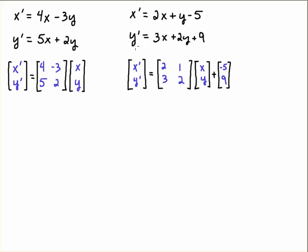Next we have a similar situation with this example on the right. We have x primed y prime becomes a column vector. We just pick off the coefficients 2, 1, 3, 2 times xy and then what do we do with the minus 5 and a 9? Well that becomes this term here. We're just going to add this vector to this system of equations.